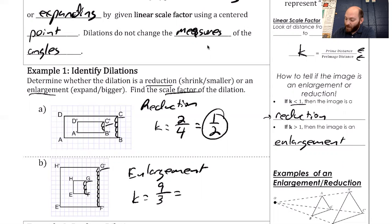That means I get nine over three, which is the same as three over one. So there's my K. I would describe the whole thing as an enlargement by a scale factor of three.